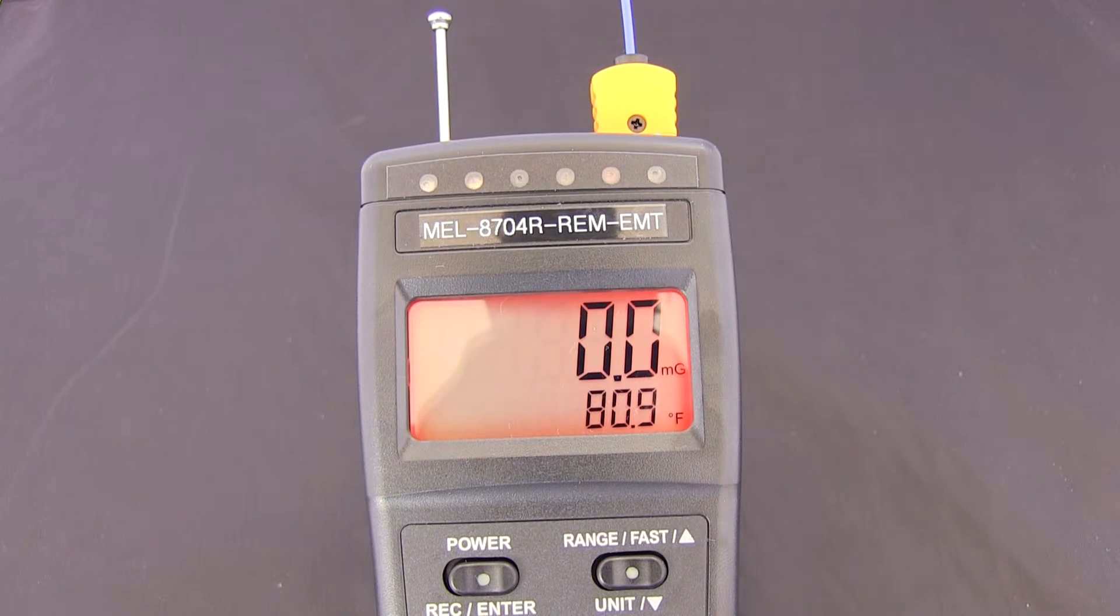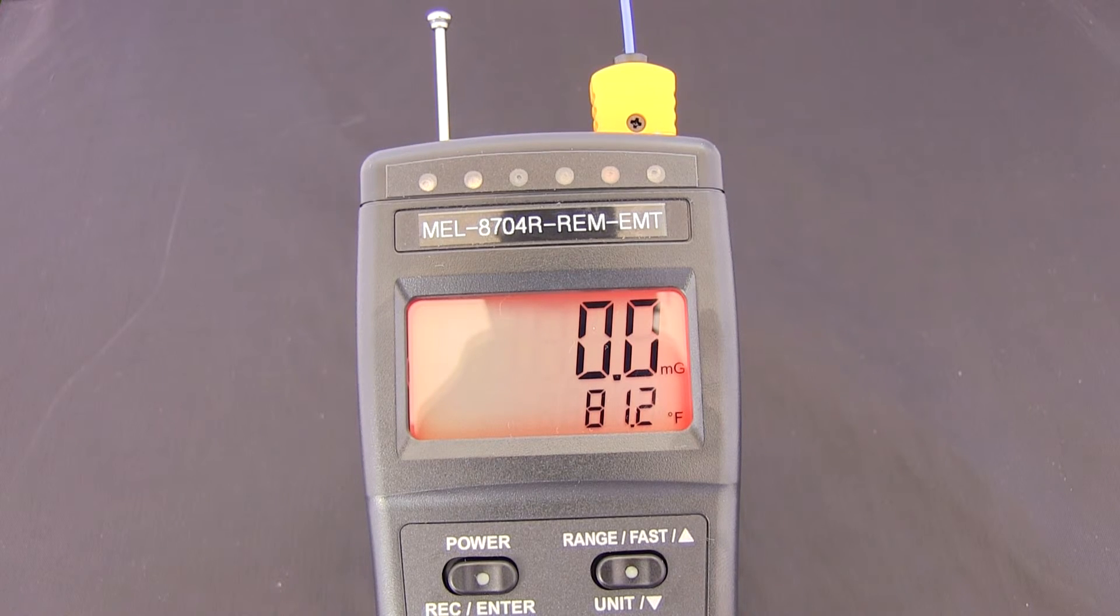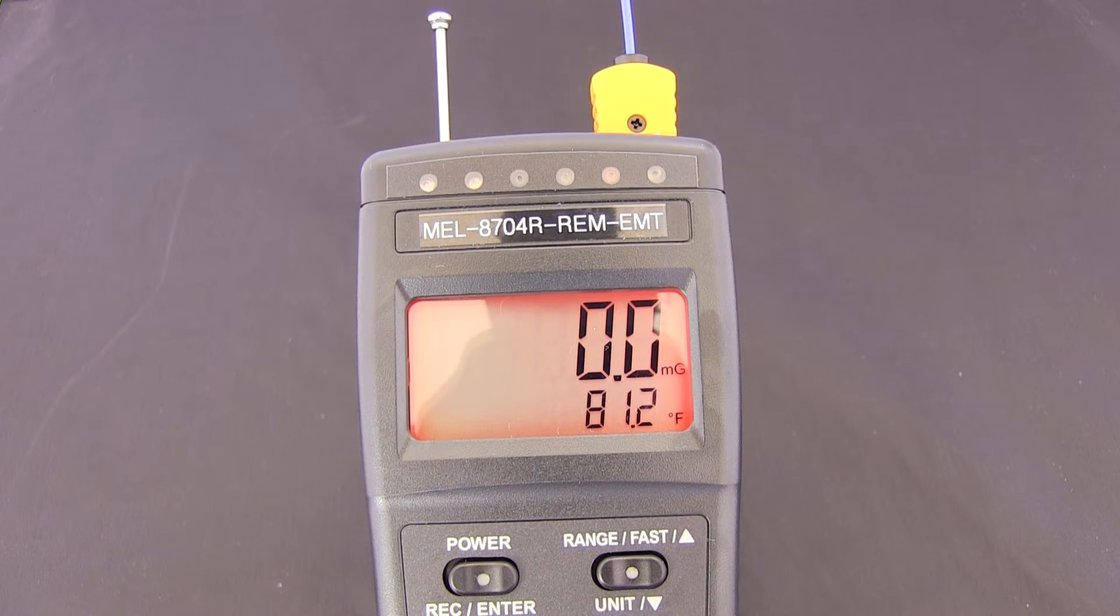Now if we go ahead and turn on the EM pump again and do the same thing. As you can see, it picks up EMF a lot slower. And it's probably a little bit less accurate than it would be without the temperature function on.